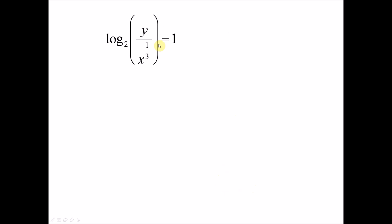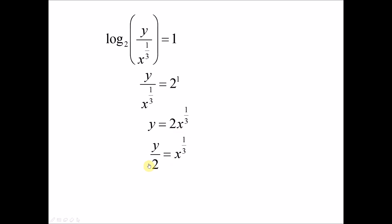Now since we formed this equation, bringing the 2 to the right hand side gives 2 to the power of 1. We move numbers around to get x in terms of y. Since we want x in terms of y, we move the 2 — we get over 2. And 1 over 3 is actually the cube root, so when we move it, it becomes the cube of y over 2. The final answer is x equals y to the power of 3 over 8.